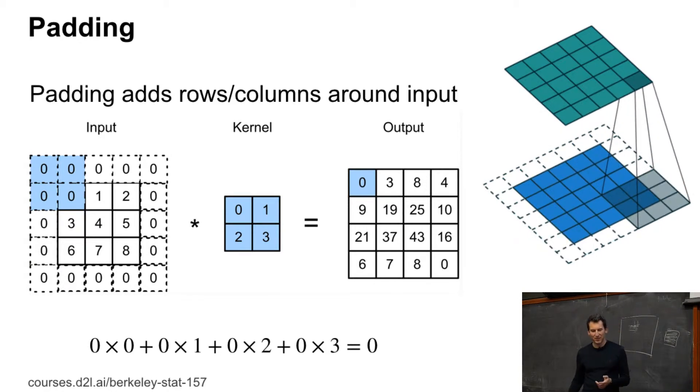In this case here in the example, we actually have a 3 by 3 image convolved with a 2 by 2 kernel. If I did this naively, I would get a 2 by 2 output.